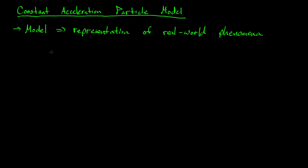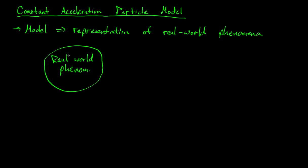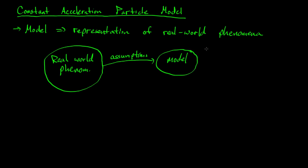In physics, we take some real-world phenomena and ask: what's going on and how can we characterize it? What are some of the things that make it special? We look at a common situation and then make some assumptions about it — for instance, something moving with constant acceleration — and out of those assumptions we build a model, a representation of that phenomenon.